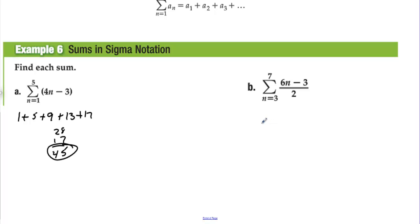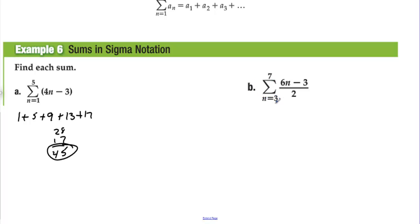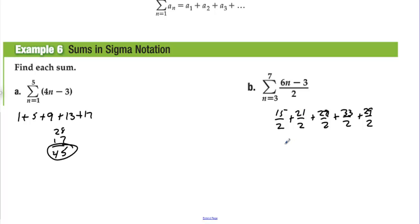Letter B: n equals 3 to 7, so we start with 3. For n equals 3: 18 minus 3 equals 15, giving 15 halves. For n equals 4: 24 minus 3 equals 21, giving 21 halves. For n equals 5: 30 minus 3 equals 27, giving 27 halves. For n equals 6: 36 minus 3 equals 33 halves. For n equals 7: 42 minus 3 equals 39, giving 39 halves. Adding these: 15 plus 21 plus 27 plus 33 plus 39 all over 2, which equals 125 over 2.